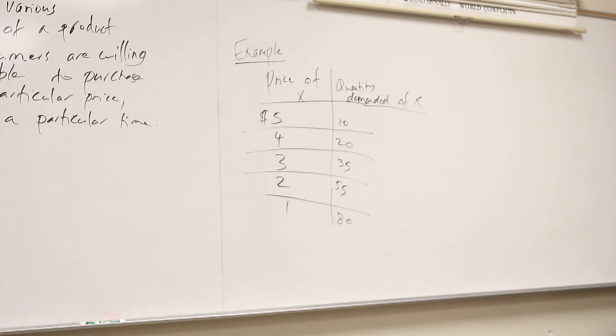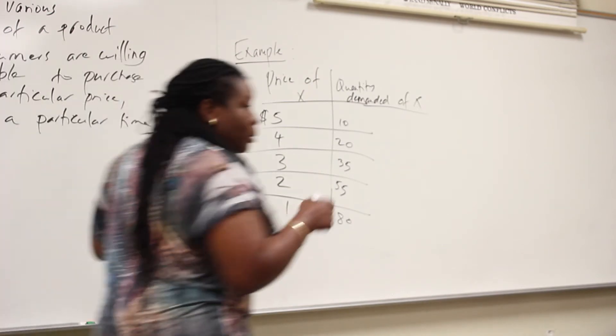When you look at the price of X and the quantity demanded of X, do you notice anything? So as the price goes down, the quantity demanded goes up. Down and up. What type of relationship is that? Negative. Negative relationship, which means the graph should look like what? Down. Down. Very good. So people are ready for this quiz.